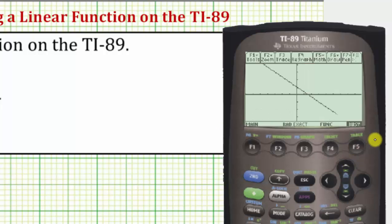So this zooms out, and if we press trace now by pressing F3, notice how the setting is still zoom decimal, even though X is changing by a different scale. Looks like by 0.8 each time.